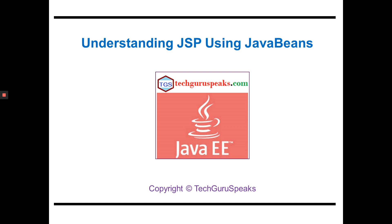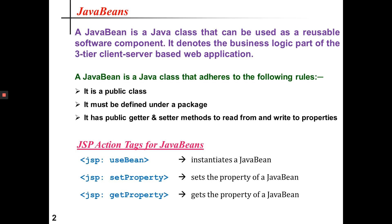Today I would like to describe how JSP works using JavaBeans. A JavaBean is basically a Java class that can be used as a reusable software component. If you remember the three-tier client-server based web-application architecture, it has three tiers: presentation tier, business tier, and the data access tier. JavaBeans are basically the business logic part embedded in the business tier, so they have a very good impact on building web-based applications.